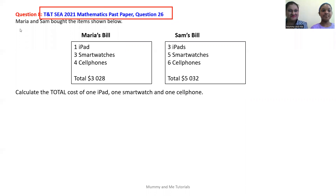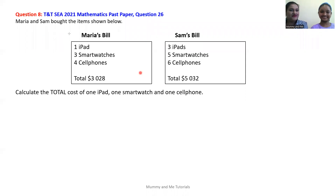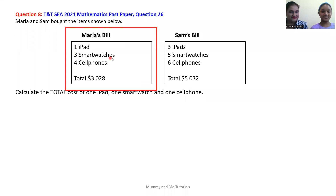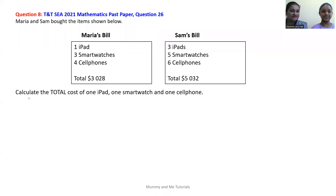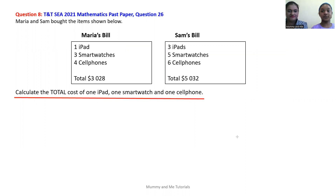Would you like to read? Maria and Sam bought the items shown below. Can you tell me what did Maria purchase? One iPad, three smartwatches, and four cell phones for a total of $3,028. Can you tell me what did Sam purchase? Sam purchased three iPads, five smartwatches, and six cell phones for a total of $5,032. And what exactly is the question asking us to do? To calculate the total cost of one iPad, one smartwatch, and one cell phone.